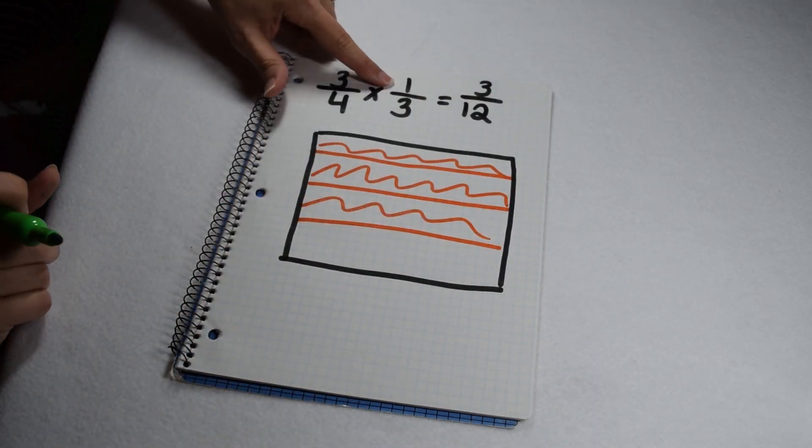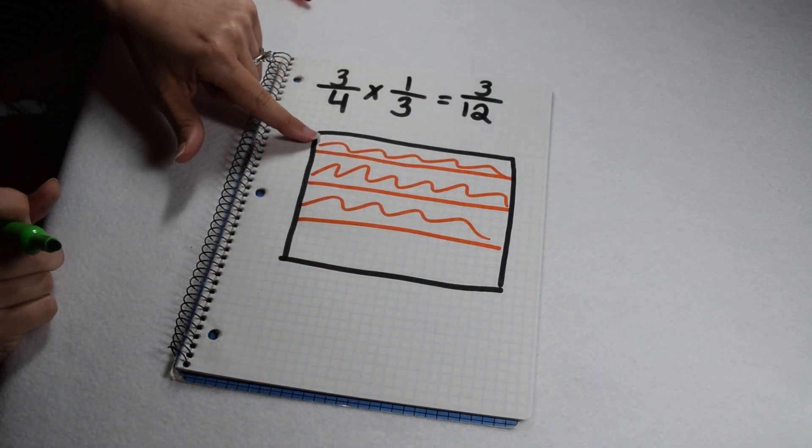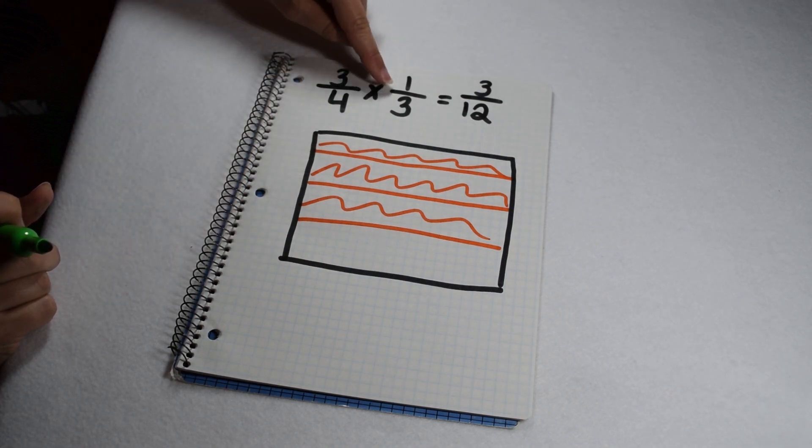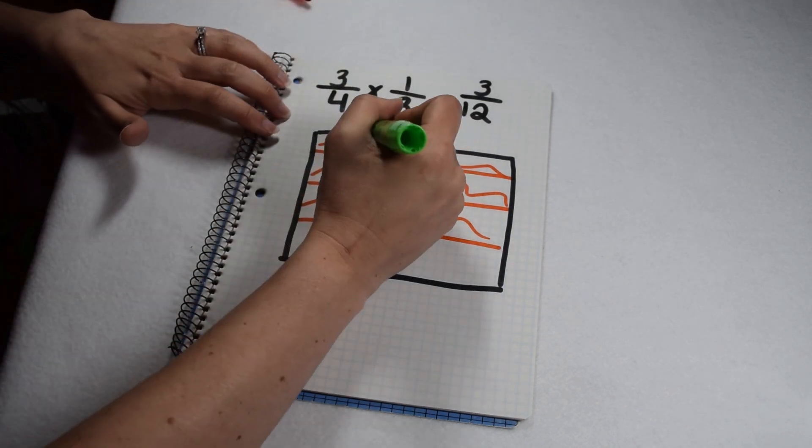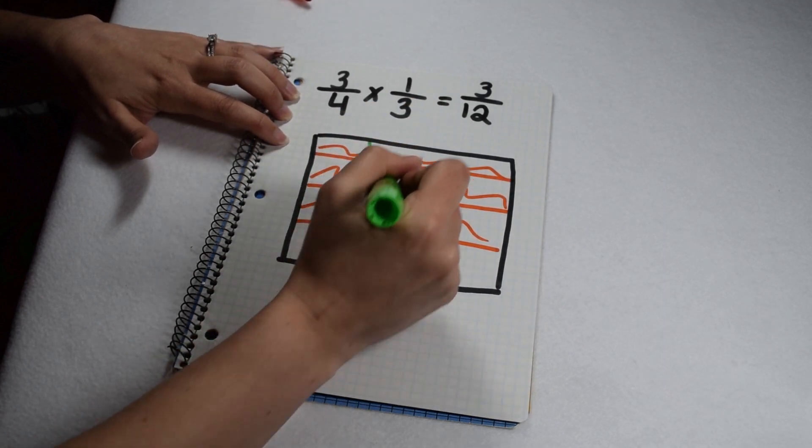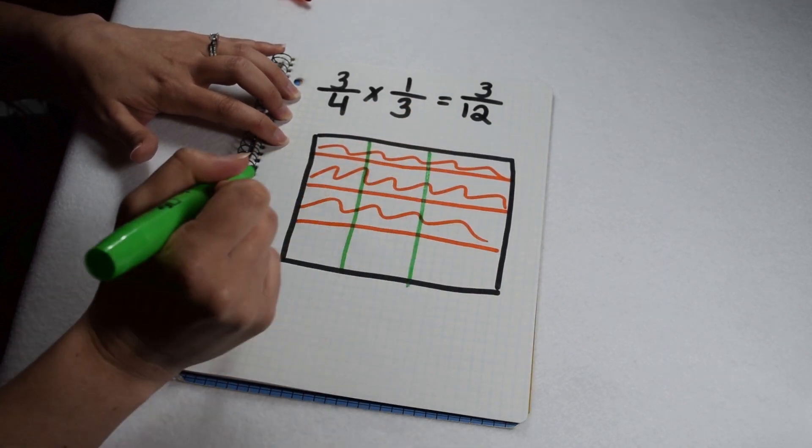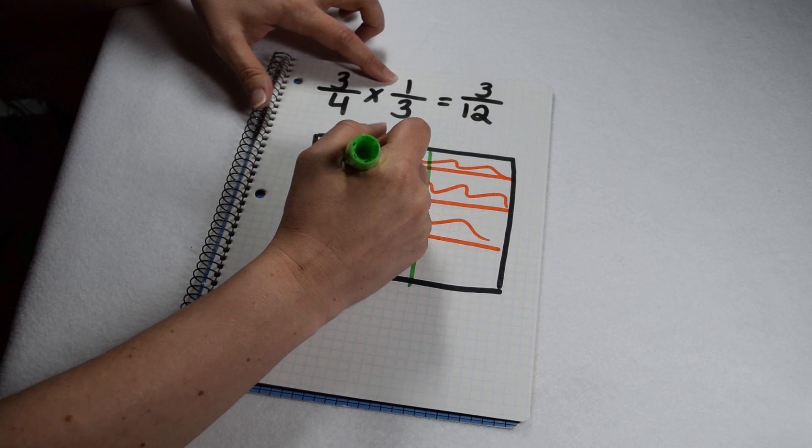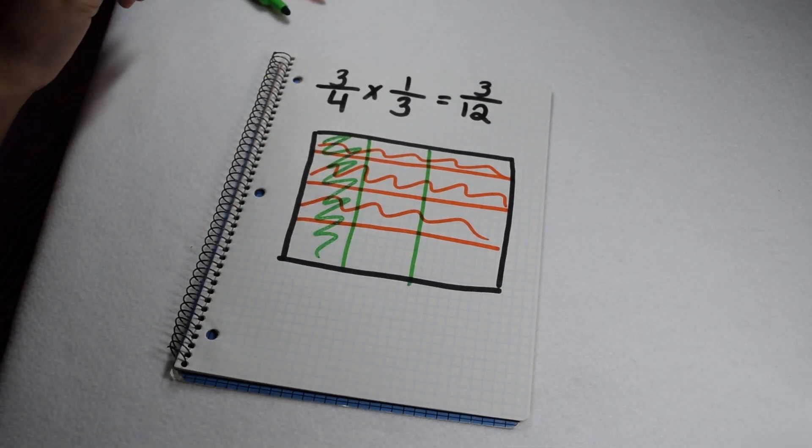Now we need to illustrate the 1/3. Since we've already broken it up horizontally, we're going to ignore those for now and break it up vertically instead. I'm going to split it into 3 pieces to represent the denominator of 3 and shade in 1 of them to represent the numerator of 1.